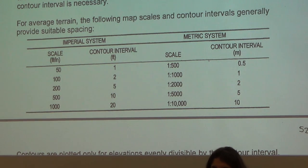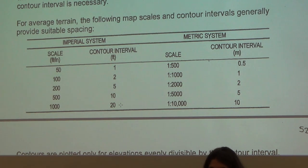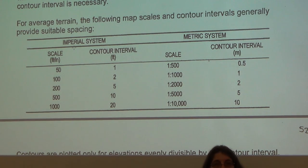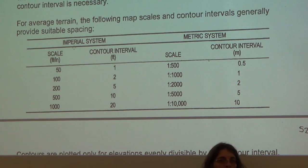In the example we saw, they were using a 20-foot contour interval. That might not be considered average terrain because there was a drop-off. Once you figure out how big the area you're mapping is and how big your paper is, you know your scale, and once you know your scale, you know what an appropriate contour interval would be.